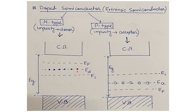As temperature increases, some donors get ionized and contribute electrons to the conduction band; some electrons from the valence band also jump to the conduction band, leaving behind holes. The number of holes produced is very small, so the Fermi level EF in an n-type semiconductor lies near the middle between the donor level ED and the conduction band edge EC. Similarly, in p-type semiconductors, the acceptor level EA lies below the intrinsic Fermi level Ei, and the actual Fermi level EF lies between EA and EV.